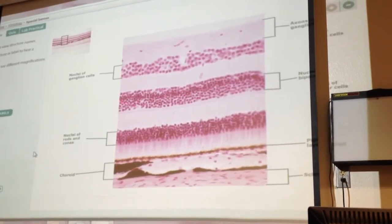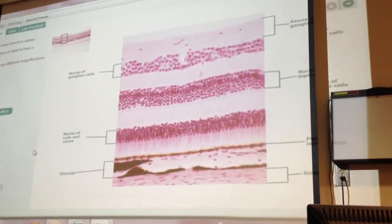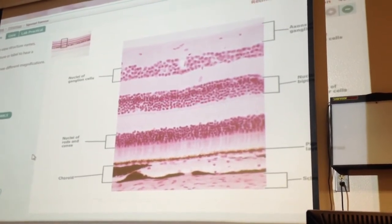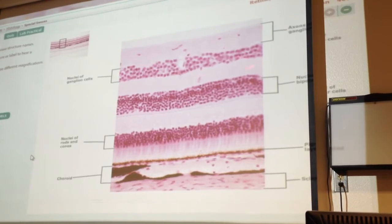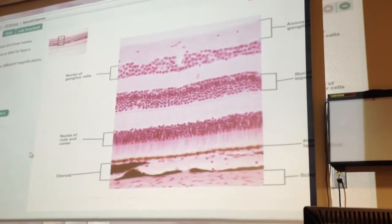What are these cells here? Bipolar cells. Bipolar cells. Yeah, if you put nuclei of bipolar cells, that's fine. What are these cells? Ganglion cells. Ganglion cells, yeah.